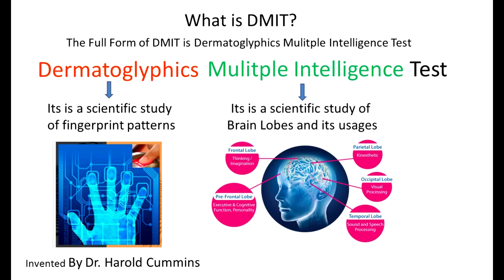The main function of the frontal lobe is thinking and imagination. Pre-frontal lobe functions are executive and cognitive functions. Parietal lobe functions are kinesthetic, related to feelings. Occipital lobe's main function is visual processing. Temporal lobe functions are sound and speech recognition.